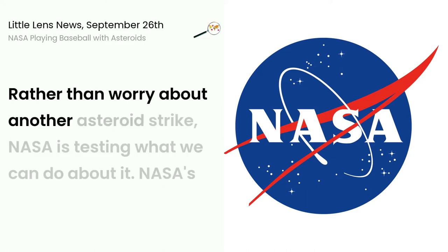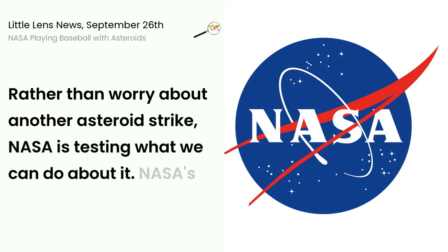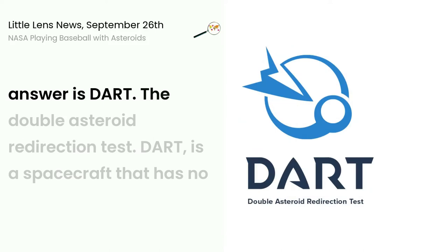Rather than worry about another asteroid strike, NASA is testing what we can do about it. NASA's answer is DART, the Double Asteroid Redirection Test.